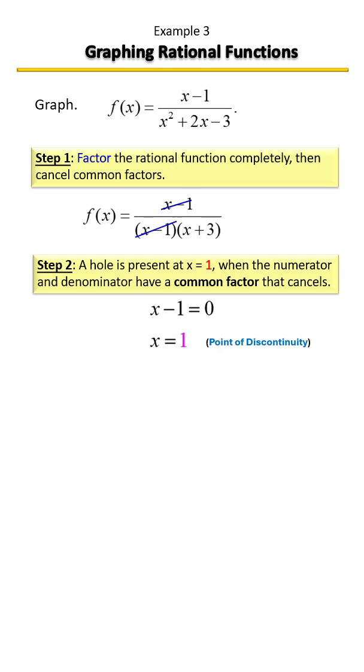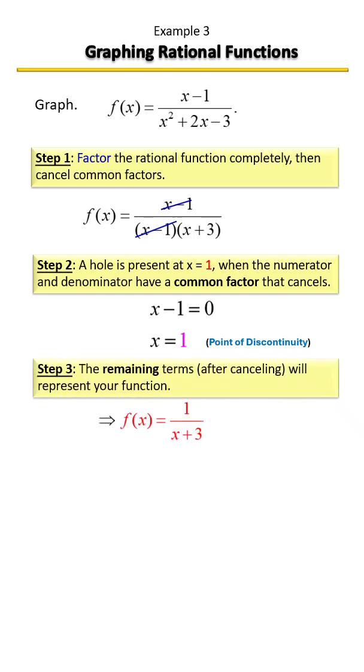Whatever terms are remaining will represent your graph of your function. So on top, everything canceled except one. So you have a one on top and you have x plus three on the bottom. So this is our function that we're going to graph.